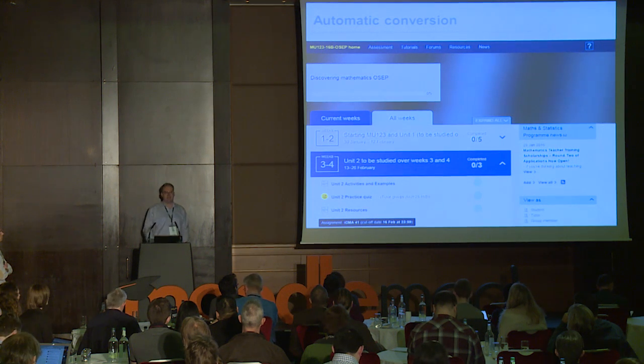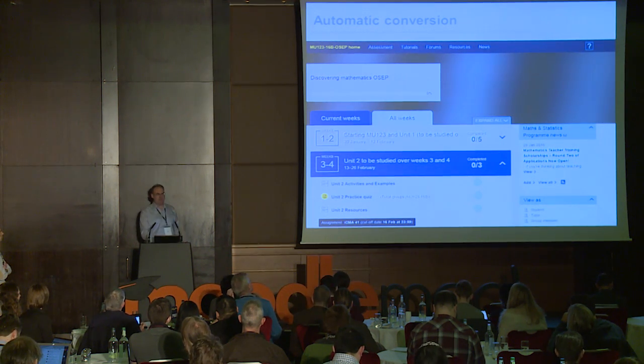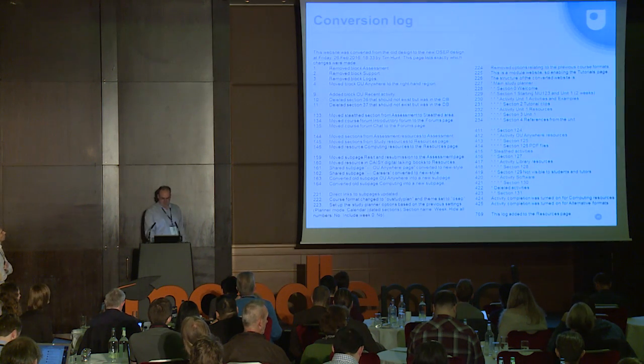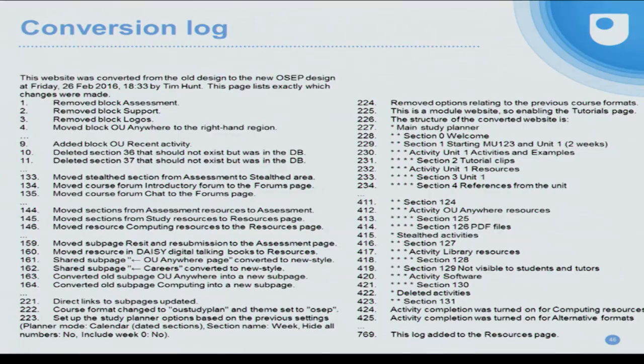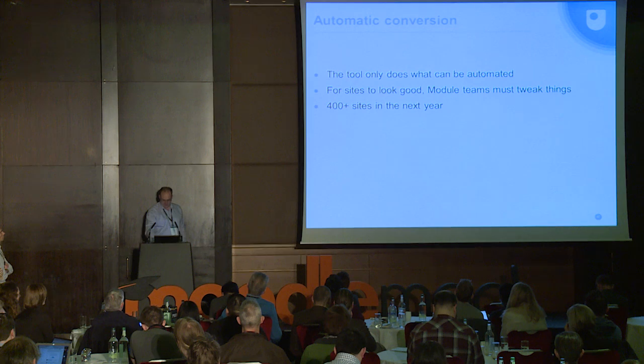We built the first version of this tool, and as people start applying it to their sites they'll realize there are more things we can automate, so we'll continue improving it. Of course it's not a perfect website — for instance, we haven't got a pretty image at the top, and you might want to look through the study planner and how the activities appear, because probably once you see your course in the new design you can do some things to improve the pedagogy. The conversion tool also makes a detailed log of every single thing it does. For a real site I converted, the log was 769 steps. There's still going to be a lot of manual work to do, and with 400 websites that's really quite scary.